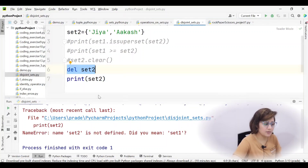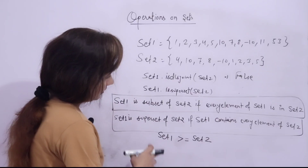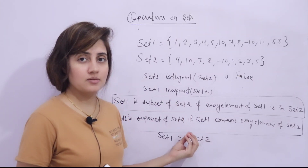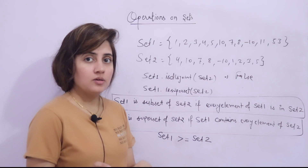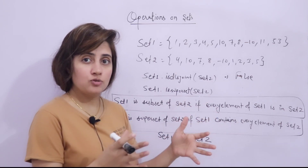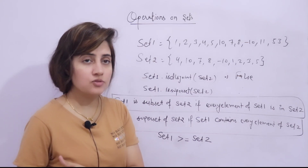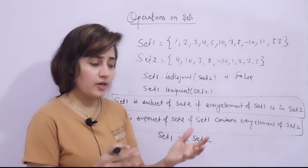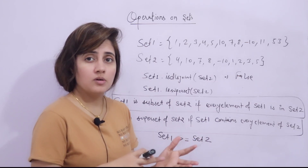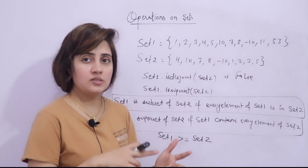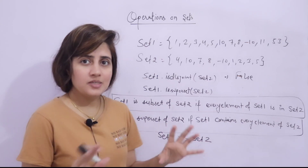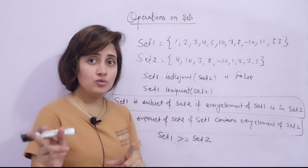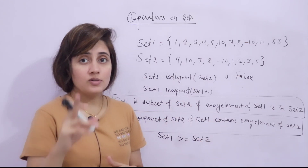That's it about sets in Python. Sets basically contain unique elements, so when you want a collection of unique elements you use a set. You should know the basic operations: how to add, remove, discard, pop, clear, and del elements, as well as union, intersection, difference, symmetric difference, isdisjoint, issubset, and issuperset. In the next video we will start loops.